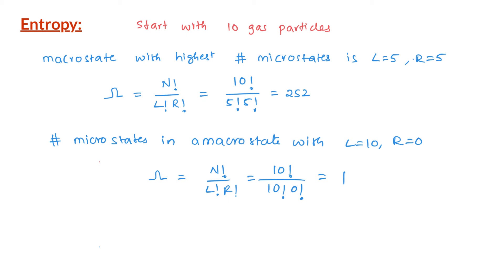Just imagine — with 1 mole of gas, it is extremely likely that a snapshot shows 0.5 moles on each side of the container. There could be plus or minus a few particles, but the chance of all gas particles being on one side is extremely unlikely. So the reason for the spontaneous expansion of gas into vacuum is that the 50-50 arrangement is statistically the most probable case.